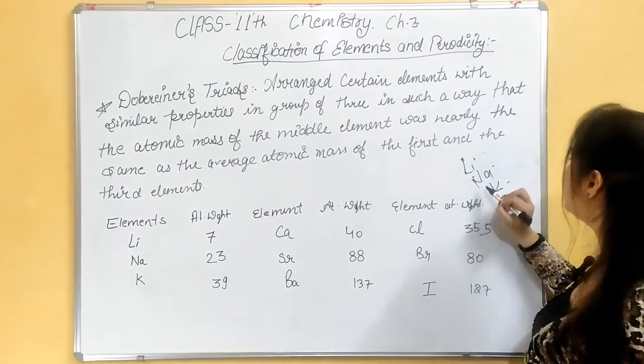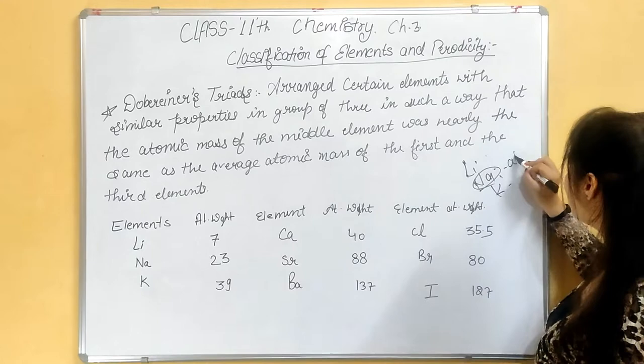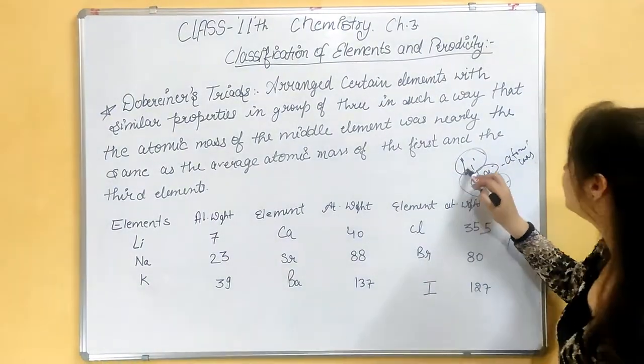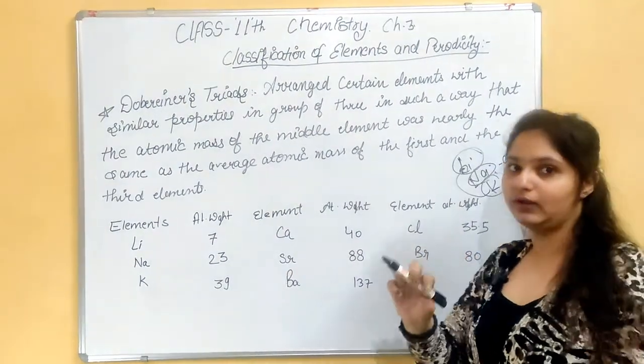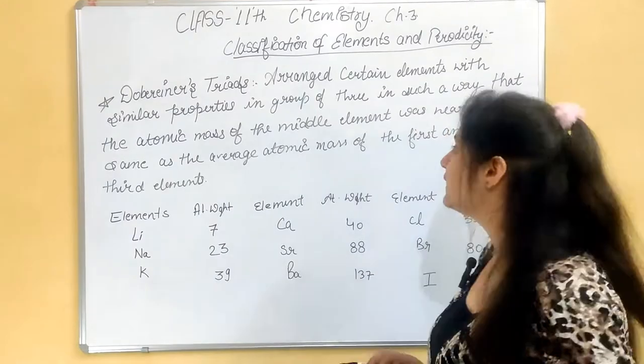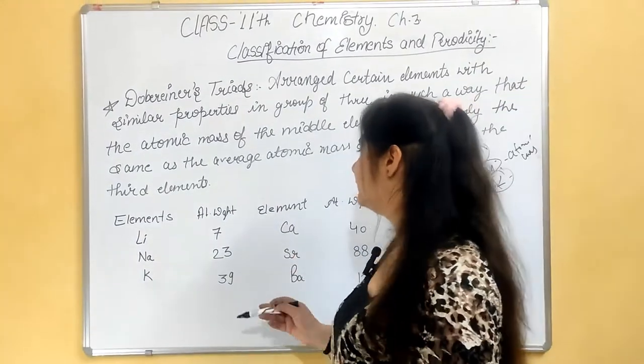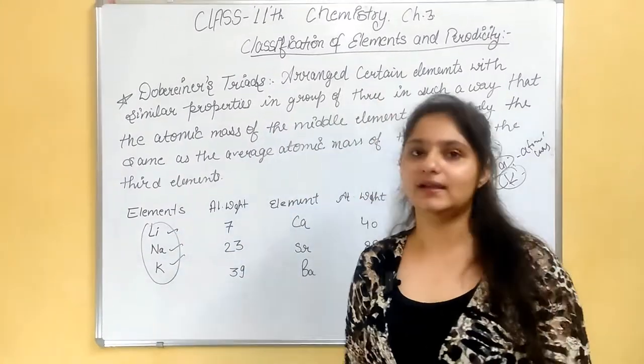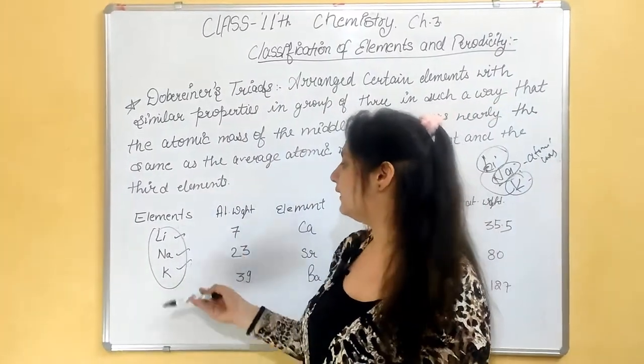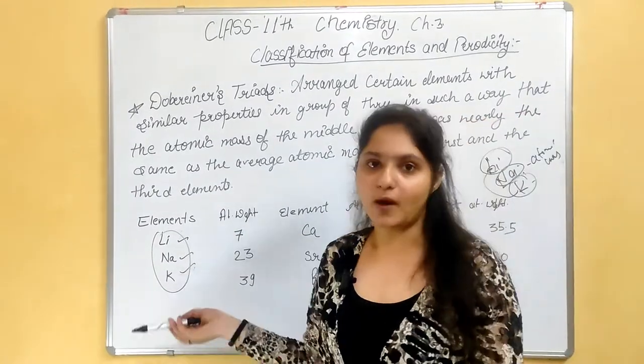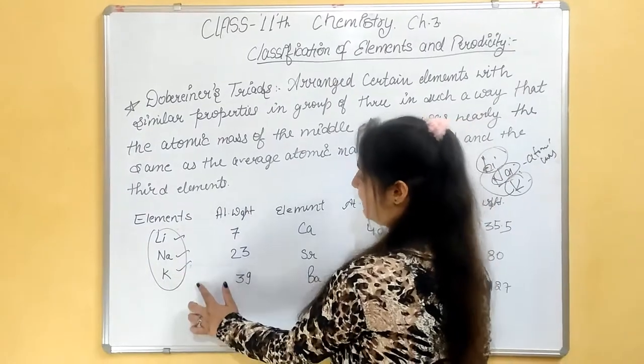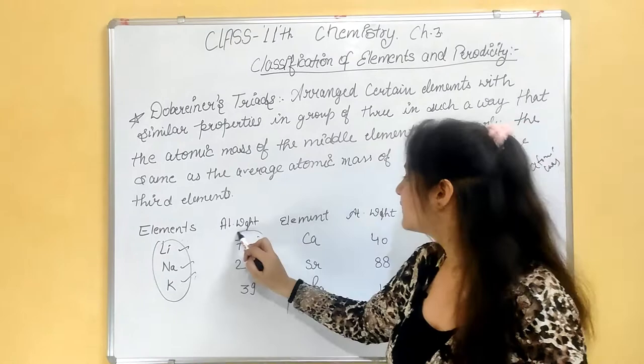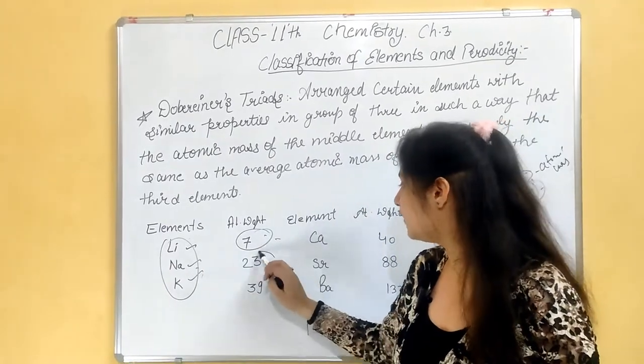Let's see an example. Take Li, Na, and K - they had some similar physical and chemical properties. He arranged them in a group of three. Li has atomic mass 7, Na has atomic mass 23, and K has atomic mass 39. He created a trend where the middle element's atomic mass is nearly equal to the average of the first and third elements.